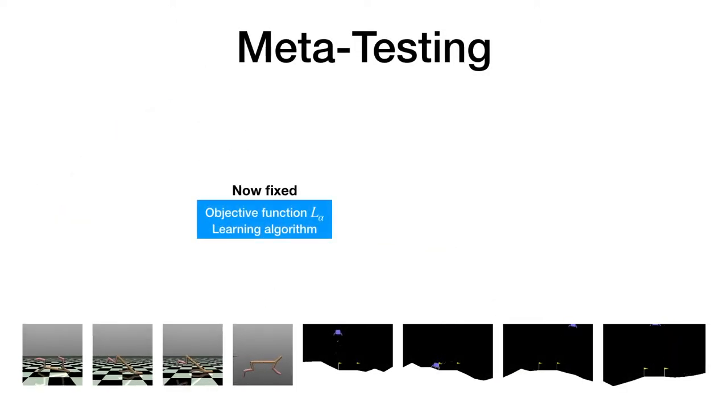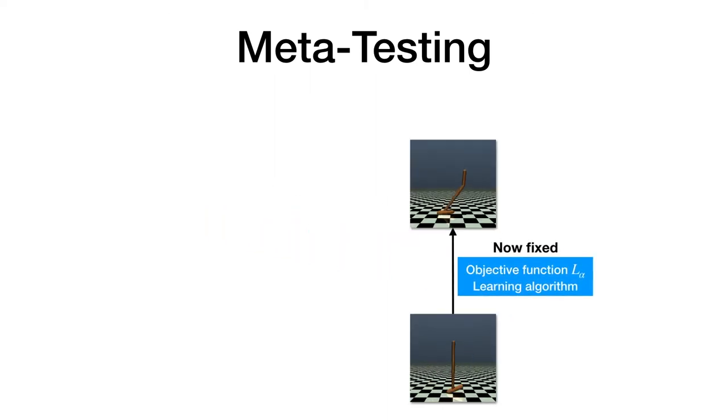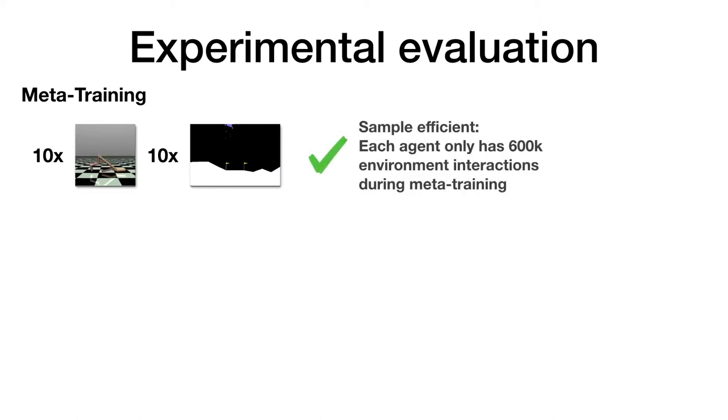After we have meta-trained an objective function, we can discard all current policies and proceed with meta-testing. We initialize a new RL agent from scratch and place it in a new environment. Instead of using a human-engineered algorithm, we use the meta-learned algorithm to improve the policy. In the following experimental evaluation, we have meta-trained with a population of 20 agents, 10 of them acting in half cheetah and 10 in lunar lander. Due to the sample efficiency of meta-training, we only use 600,000 environment interactions for each agent.